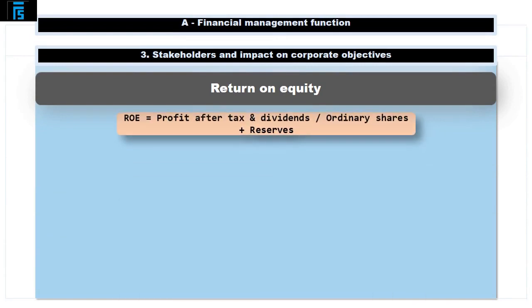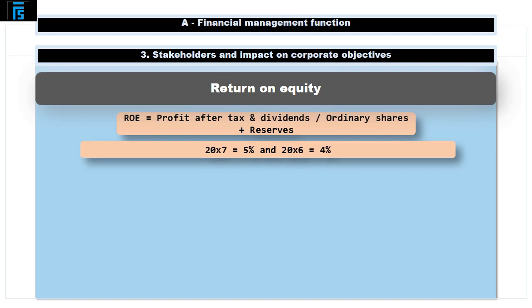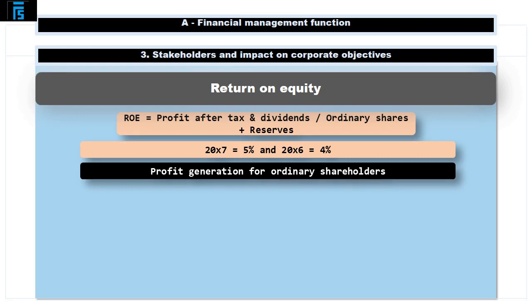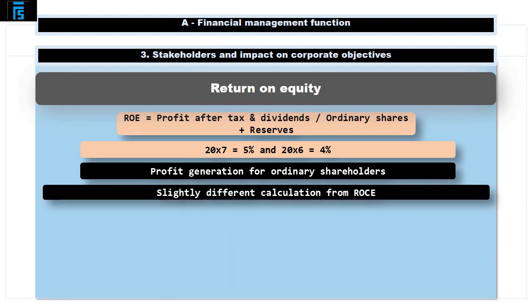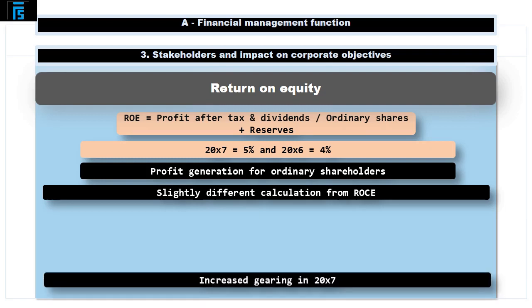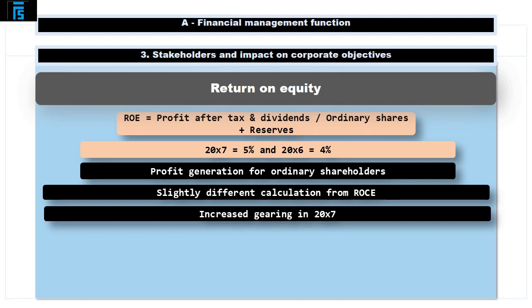The return on equity is calculated by dividing profit after tax and preference dividends by ordinary shares and reserves. Top Dog has no preference dividends, so we can just take the profit after tax. Again, we can see that the return on equity has increased slightly. This ratio measures how much profit a company generates for its ordinary shareholders with the money they have invested. It is similar to return on capital employed, only profit after tax is used rather than operating profit, and it looks only at equity invested whereas return on capital employed also takes debt into account. Top Dog took on long-term debt in 20x7, so it is more geared than in the previous year. This impacted the return on equity, which is sensitive to gearing.